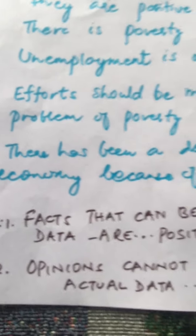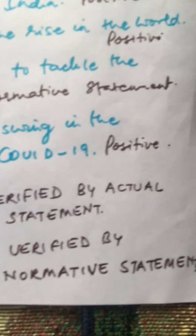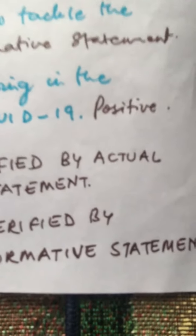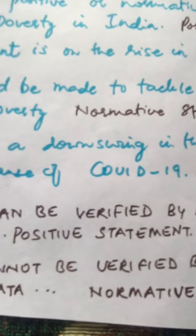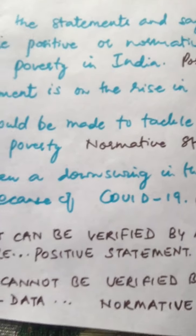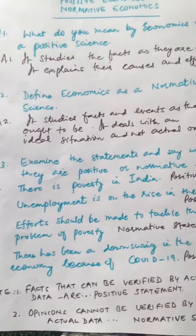To summarize: facts that can be verified by actual data are positive statements. Verifiable data makes a positive statement, while opinions that cannot be verified by actual data become normative statements.